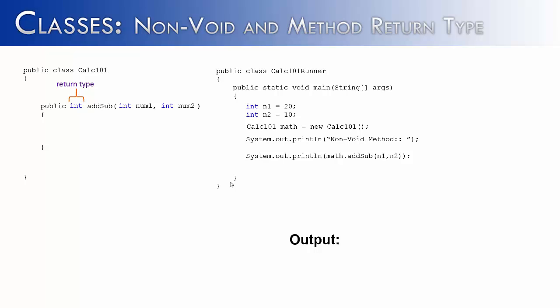Let's say I wanted to both add and subtract num1 and num2 in the exact same method. Beginning programmers might think you could write: return num1 minus num2, then return num1 plus num2. Unfortunately, if we were to run this, we would get an error saying 'unreachable statement'. Using multiple return statements in this way is not allowed — once you hit a return, it's like hitting a stop sign. The method returns what it says and cannot continue on to the next code.